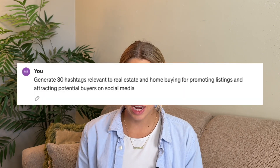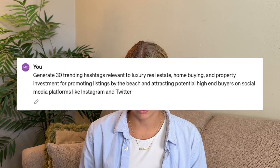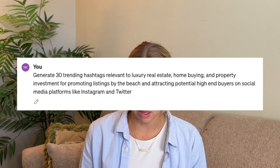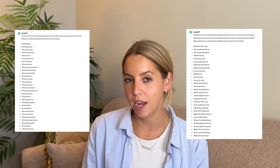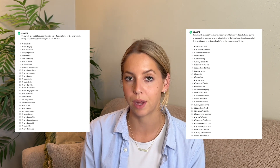The first example I typed into ChatGPT: 'Generate 30 hashtags relevant to real estate and home buying for promoting listings and attracting potential buyers on social media.' And this is what it gave me. However, if I add even more detail — 'Generate 30 trending hashtags relevant to luxury real estate, home buying, and property investment for promoting listings by the beach and attracting potential high-end buyers on social media platforms like Instagram and Twitter' — it will give me this. Because these two different prompts created lists that are so different, it just goes to show that any additional information can make a huge impact on the quality of hashtags you get.